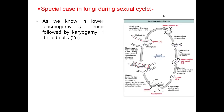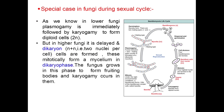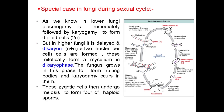Let us discuss a special case in fungi during the sexual cycle. In lower fungi, plasmogamy is immediately followed by karyogamy to form diploid cells. But in higher fungi, it is delayed and dikaryon (n+n), that is two nuclei per cell, are formed. These mitotically divide to form a mycelium in the dikaryophase. The fungus grows in this phase to form fruiting bodies, and karyogamy occurs in them. These zygotic cells then undergo meiosis to form four haploid spores.